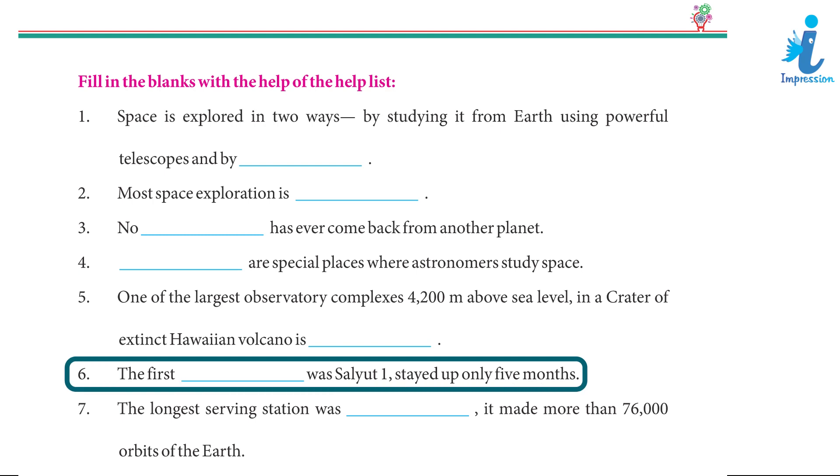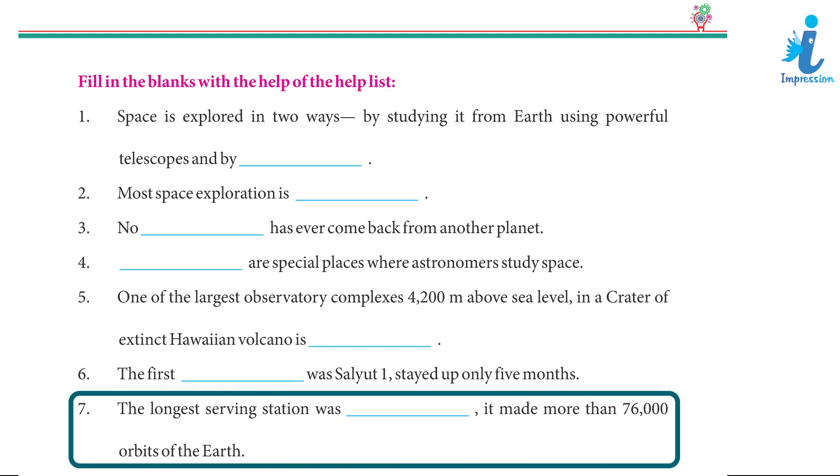6. The first space station was Salyut-1, stayed up only five months. 7. The longest serving station was Mir, it made more than 76,000 orbits of the Earth.